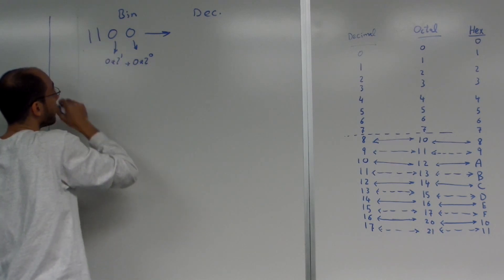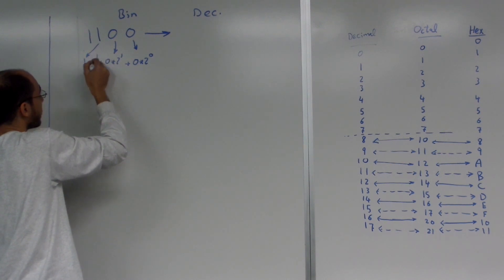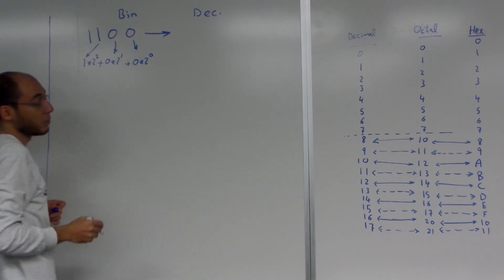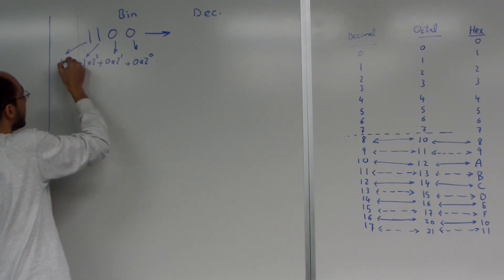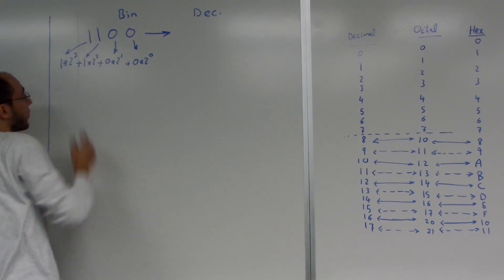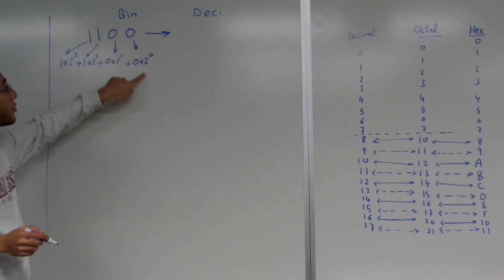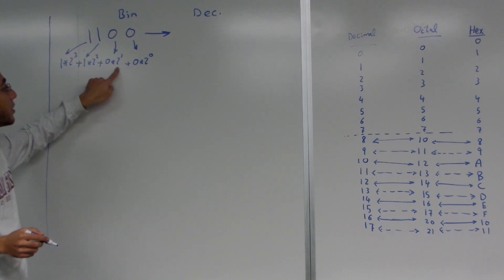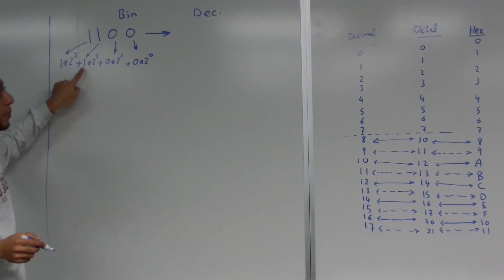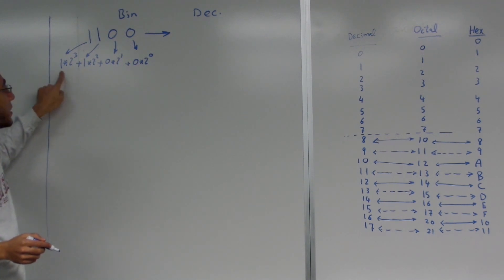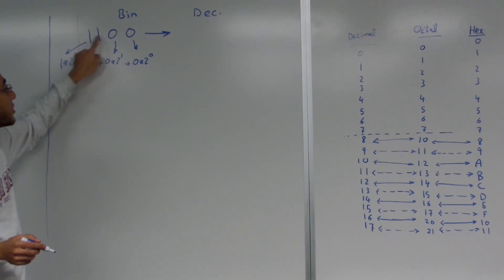Which is this zero. Plus one — which is this one — times two to the power two. And then one times two to the power three. So zero times two to the power zero, zero times two to the power one, one times two to the power two, and one times two to the power three. If you look at these weights, the numbers multiplied by the twos are 1, 1, 0, 0 — which is the same number.